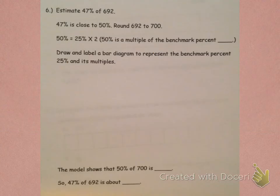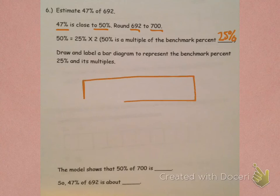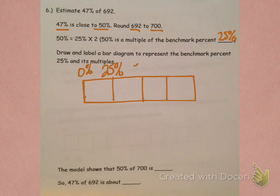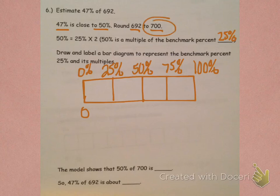Here, we have to estimate 47% of 692. 47% is close to 50%, and 692, we want to round to 700. 50% equals 25% times 2, which means that 50% is a multiple of the benchmark 25%. So we're going to draw and label a bar diagram to represent the benchmark 25% and its multiples. 25%, we should know that that means we're going to take a bar diagram and split it into 4s. So that means that we have 0%, 25%, 50%, 75%, and then, of course, if we have it all, we have 100%.